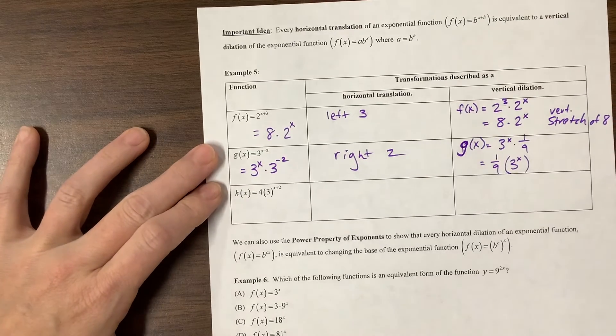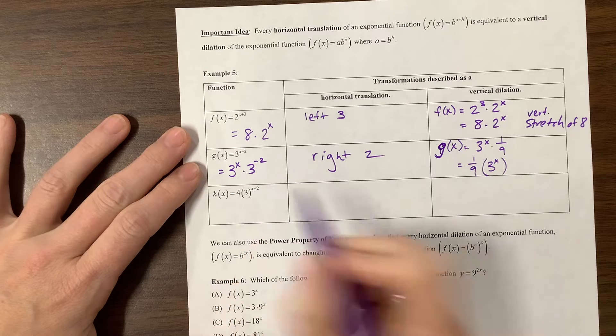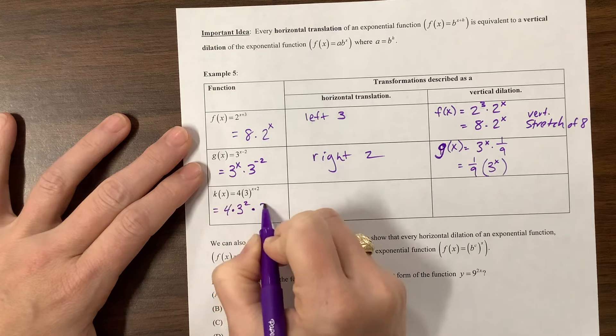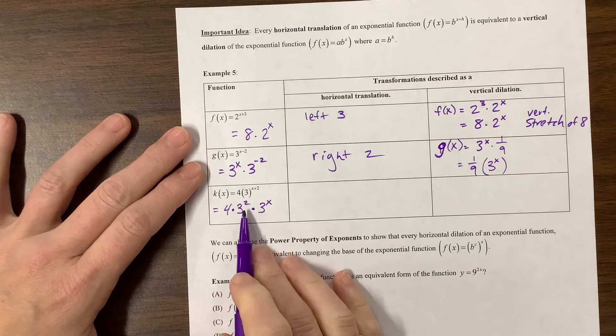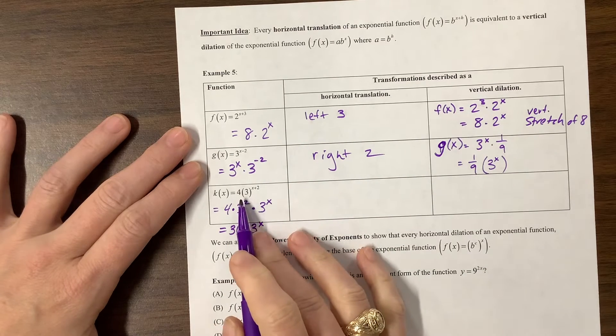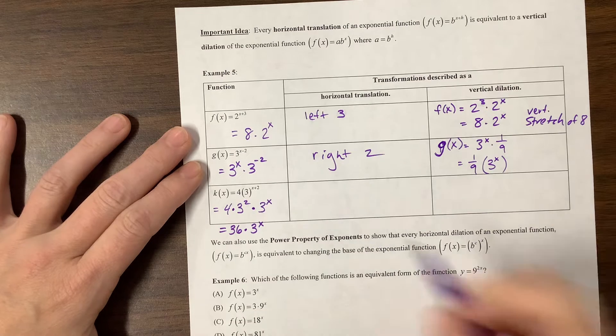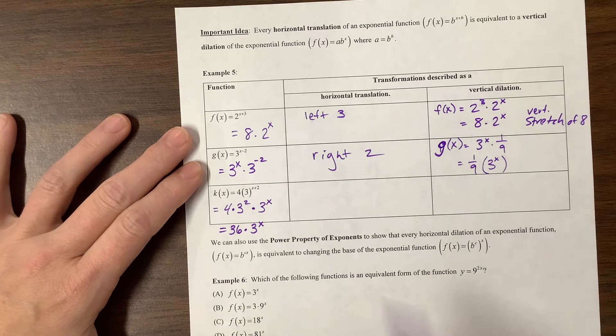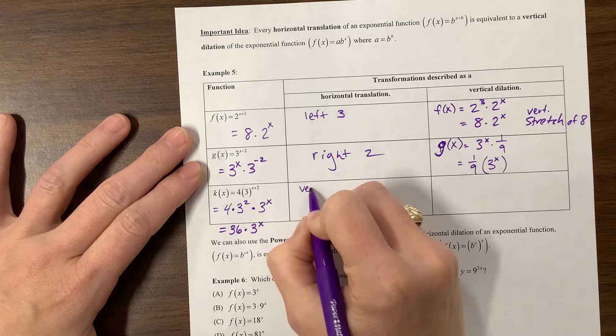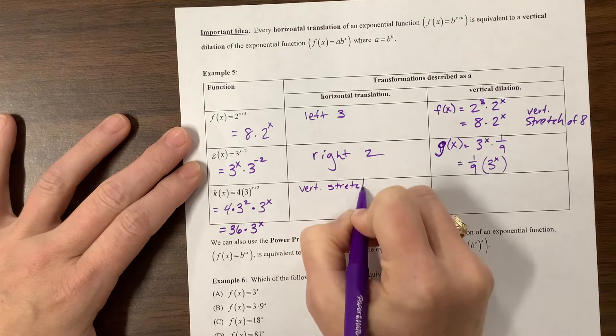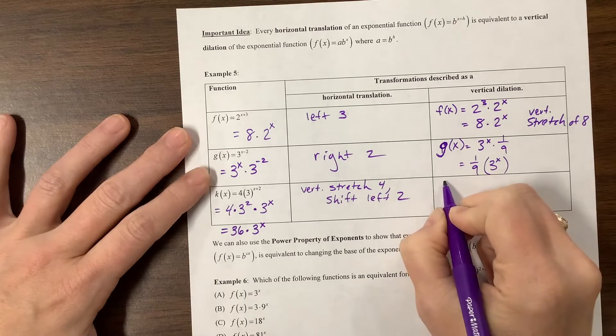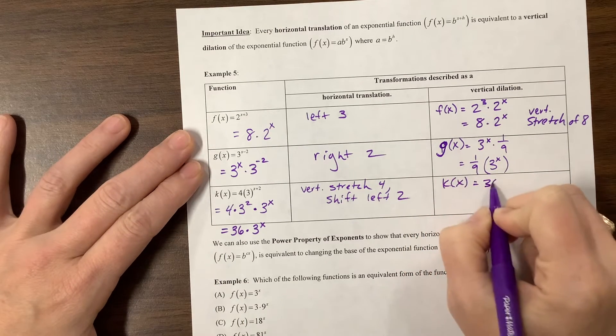Okay, coming back here, looking at this one, we have 4 times 3^(x+2). Well, so what does that mean? That means we have 4 times 3^2 times 3^x. 3^2 is equal to 9 times 4 is 36, so this is 36 times 3^x. Oh, and so what happened here? This had a horizontal translation. Well, it depends on what we start with as our parent function. We had a vertical stretch of 4 and a horizontal shift left, so it was a vertical stretch of 4 and then shift left 2.